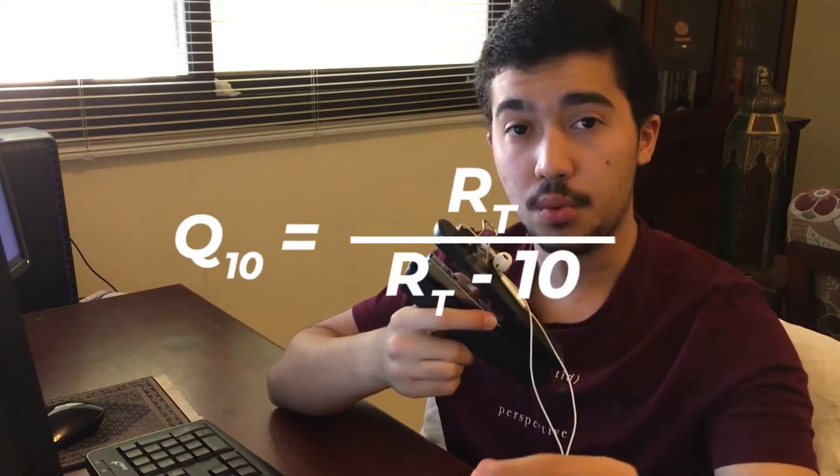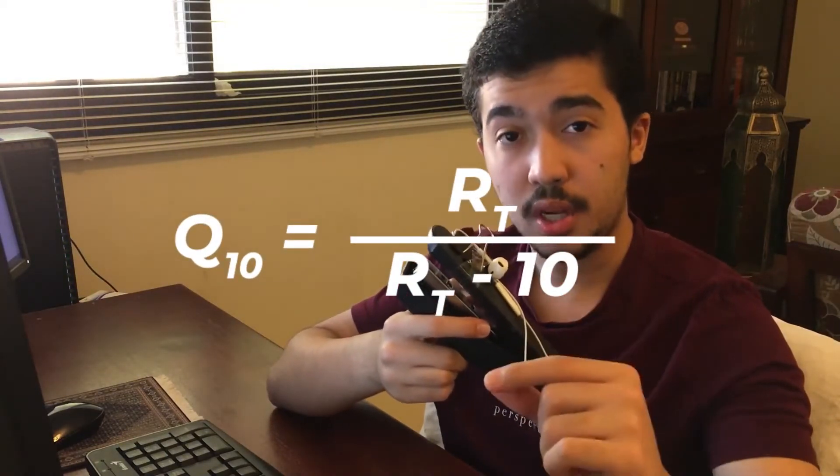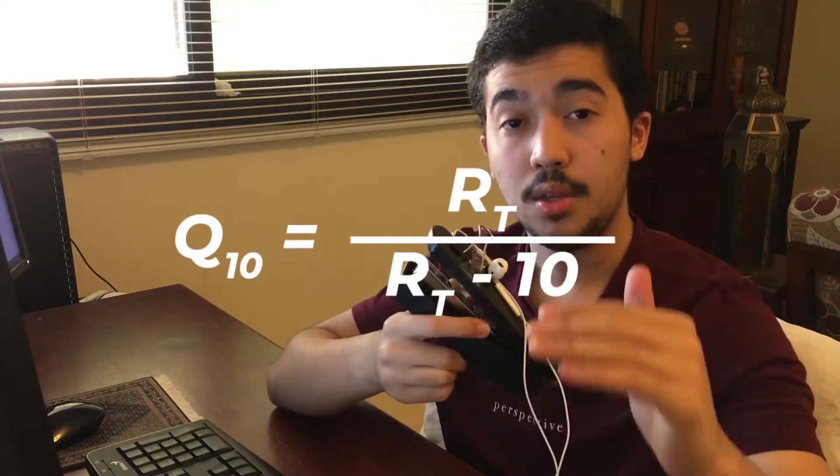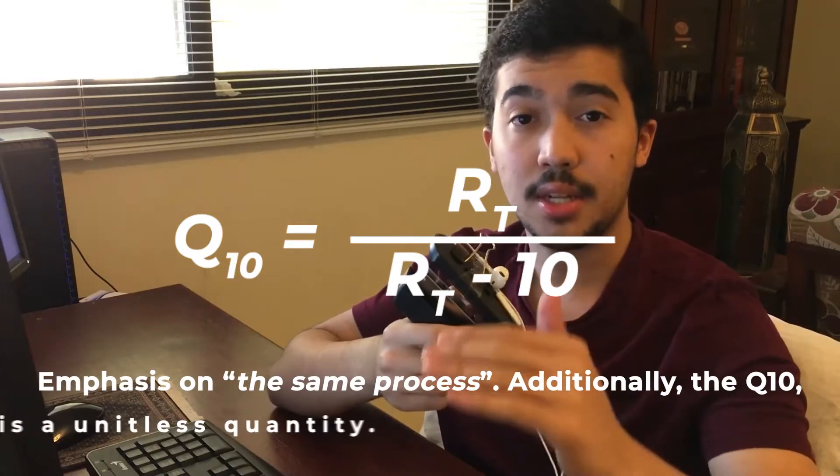The Q10 describes the temperature sensitivity of a reaction as a ratio of the rate of the reaction at one temperature divided by the rate of the reaction of the same process at 10 degrees lower.